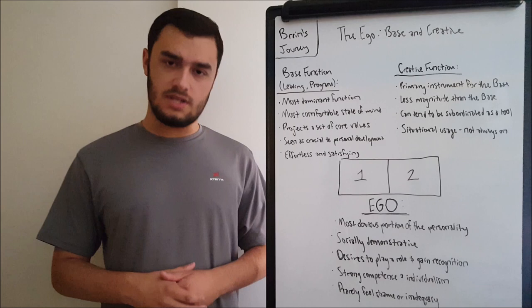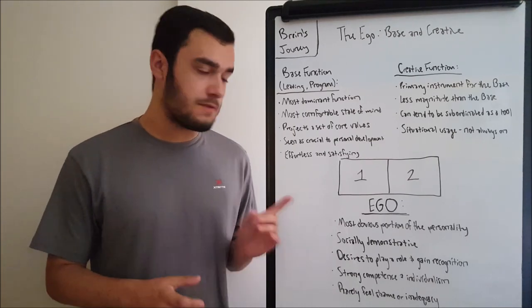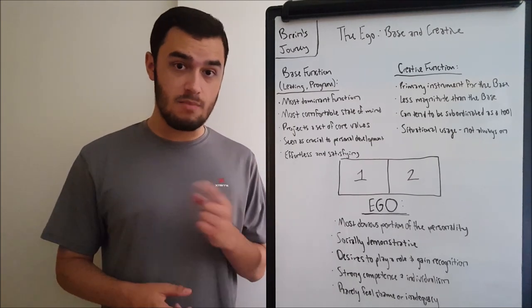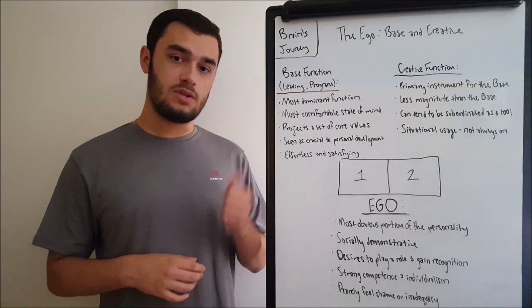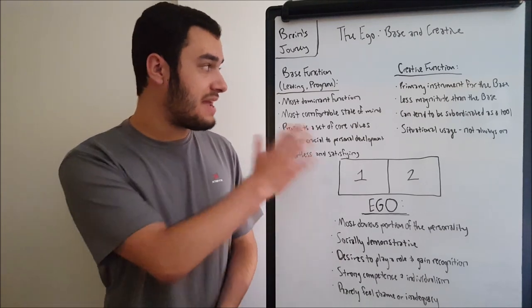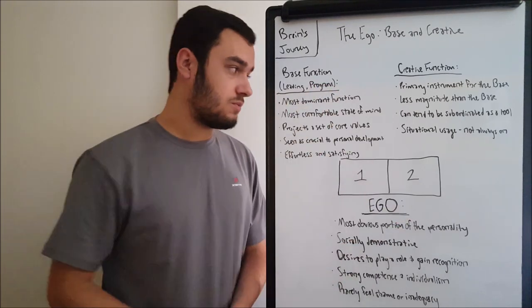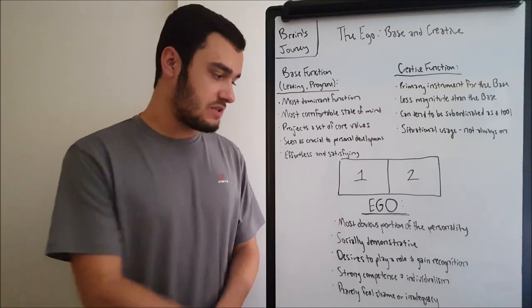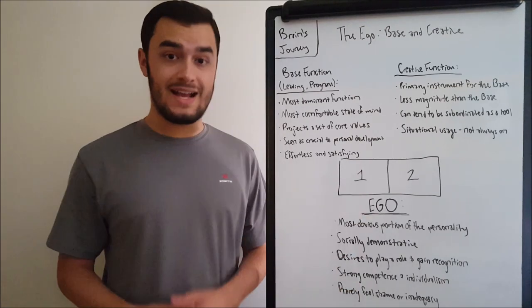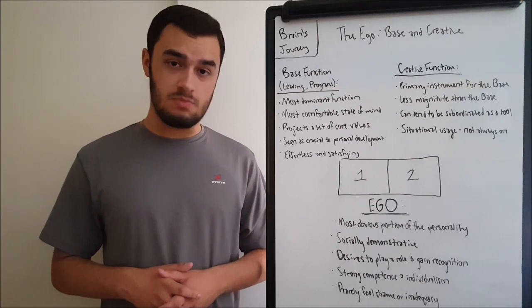So today, we're going to be talking about the first two functions out of eight in Model A. We're going to be talking about the ego, which means the base and the creative function. We're going to be talking about the base first, then the creative, and then discussing what their properties are as a group. So let's begin.